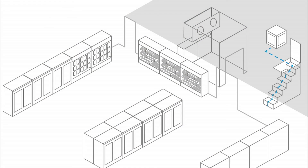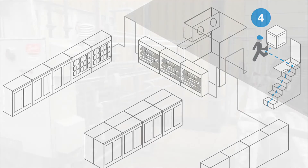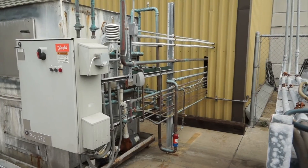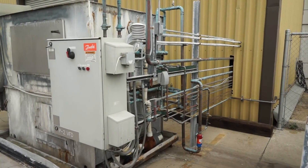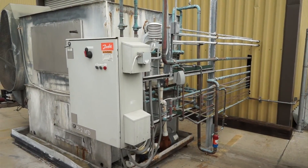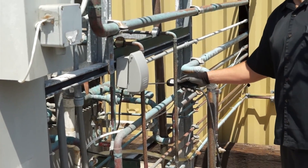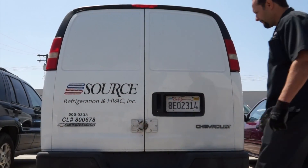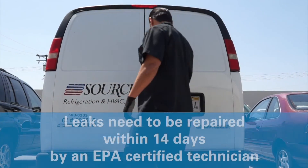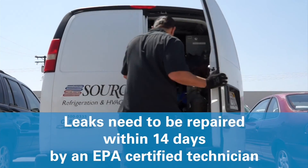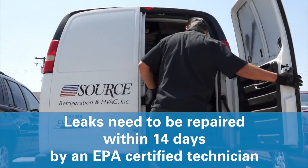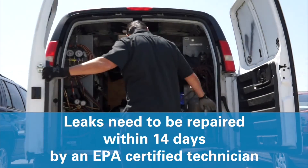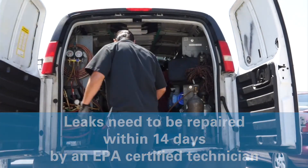Proceed to the rooftop condenser equipment. Make sure to look for oil stains and run the sniffer along the refrigeration lines. If any leaks are found, California law requires that they be repaired within 14 days by an EPA-certified technician.